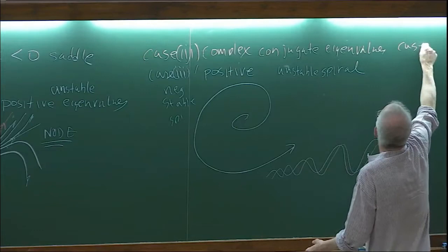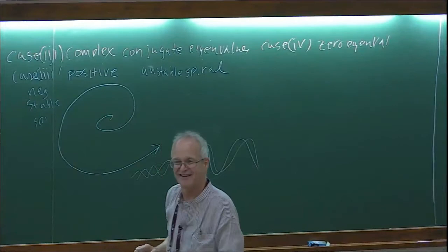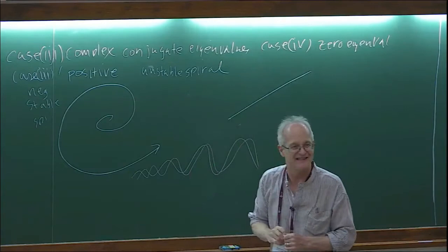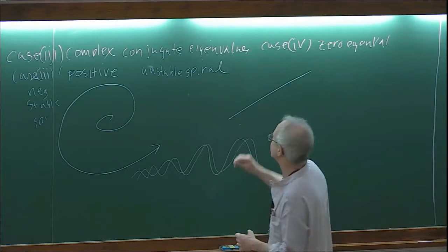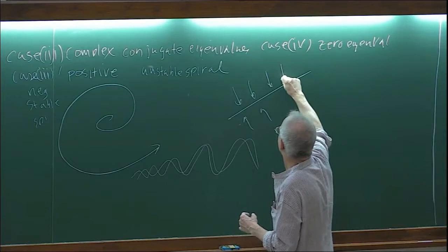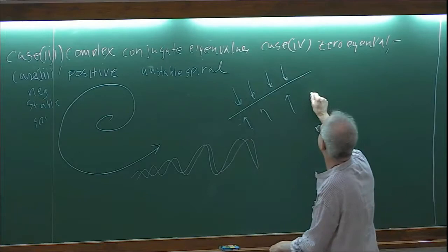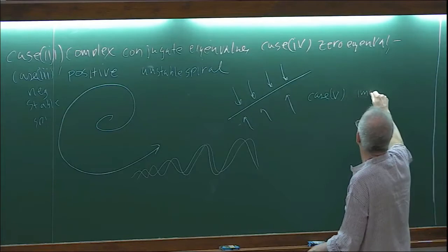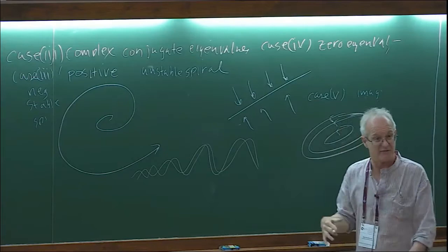Case four: zero eigenvalue. Then there's a line of equilibrium points — everywhere along the eigenvector corresponding to the zero eigenvalue. If the other eigenvalue is negative, you get trajectories coming in toward that line. Case five: imaginary eigenvalues. You get what's called centers — a series of closed curves, because everything's just pure cosines and sines, and you get ellipses.